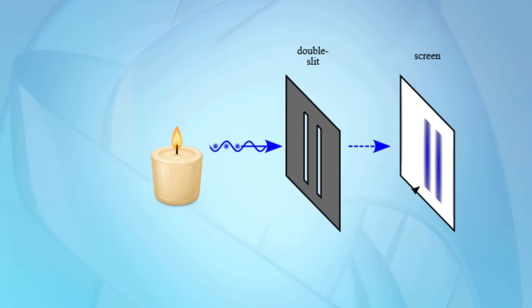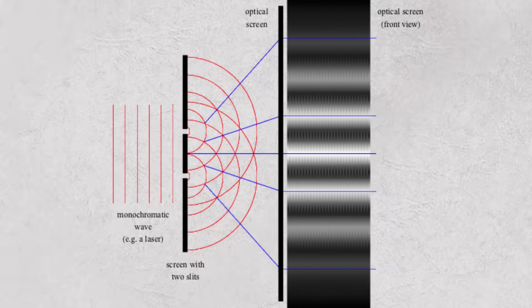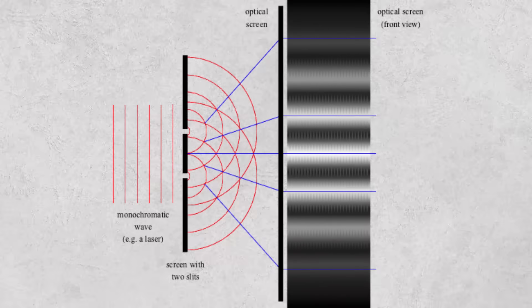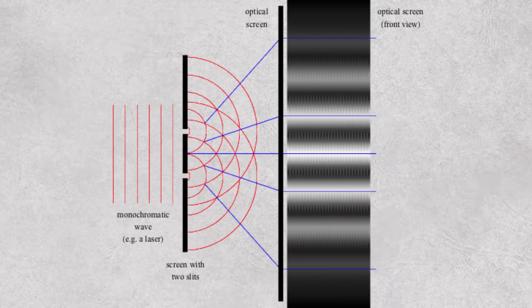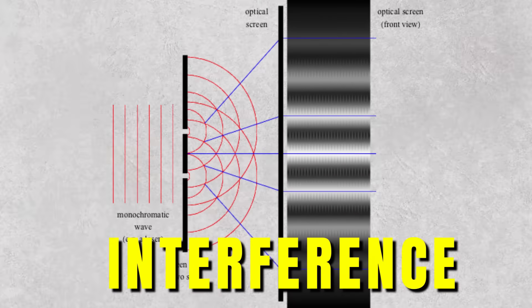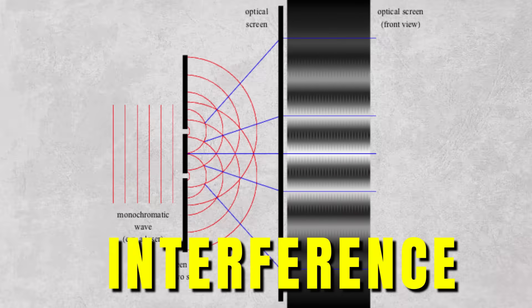Instead of two spots, there were many. A pattern of fringes. Bright, dark, bright again. Light was interfering with itself. Where the waves met in phase, they reinforced each other. Bright bands. Where they met out of phase, they cancelled. Darkness. This was interference. Proof that light moves as a wave.